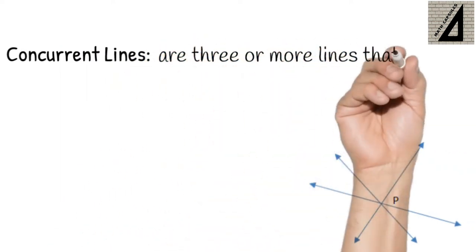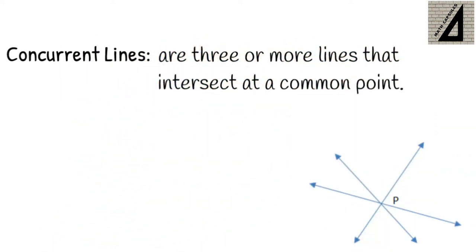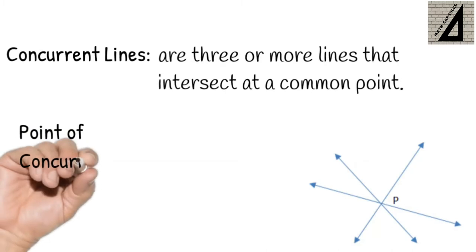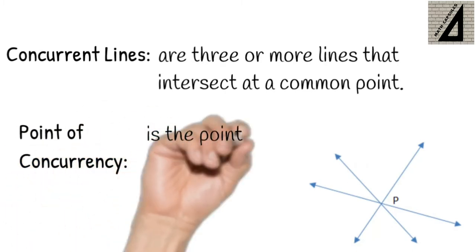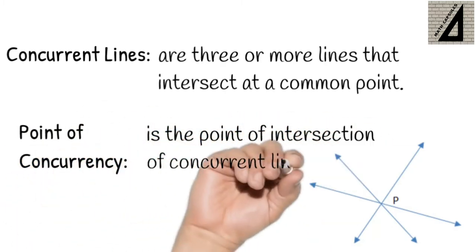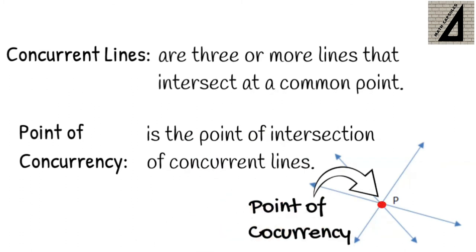Concurrent lines are three or more lines that intersect at a common point. The point of concurrency is the point of intersection of concurrent lines. Like here, P is the point of concurrency of the concurrent lines.